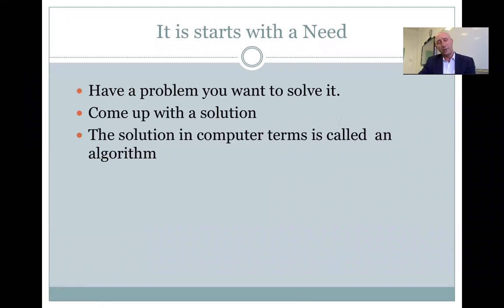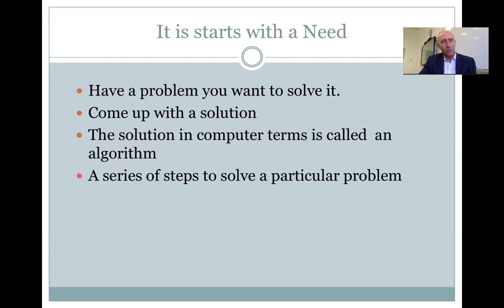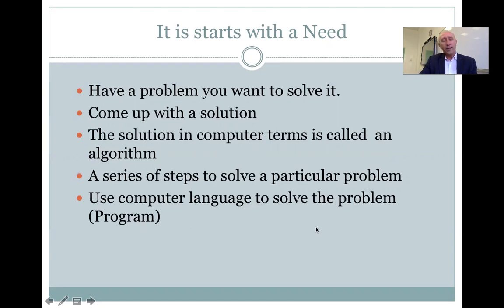Now, the solution in computer terms we call an algorithm. So you hear the term algorithm a lot, and there are different complexities of this algorithm. What is an algorithm? An algorithm is nothing but a series of steps to solve a particular problem. Once you come up with this algorithm and you know how to solve it, usually you can write programs easily to solve that problem using computer language. We call it a program.